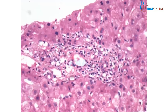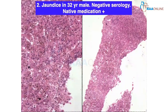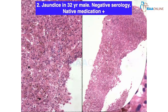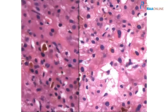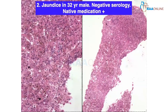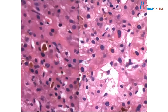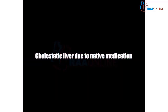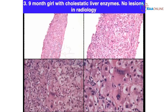Case 2: 32-year-old male, negative serology, on native medication. What do you think? This also looks like a blue portal pattern because there are infiltrates, and there is cholestasis — very good. With a history of native medication, we have to think of drug-induced liver injury — DILI. So the answer is cholestatic liver disease due to native medication.